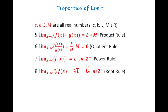If we multiply two functions, we multiply their limit results as well. If we divide those functions, we can divide the results of the limits. If we take the nth power of the function, we take the nth power of the limit result. And if we take the nth root of the function, we take the nth root of the limit value.